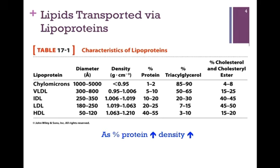Let's look at Table 17.1 from your book, illustrating the characteristics of lipoprotein particles. The lipoprotein particle is indicated on the far left: chylomicrons, VLDL, IDL, LDL, and HDL. As we go down the table, the diameter decreases from chylomicrons to HDL, which correlates with an increase in density. As the diameter decreases and density increases, we have a higher proportion of protein and a smaller proportion of triacylglycerol. The key takeaway is that as the percentage of protein increases, so does the density of the particle.